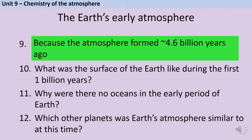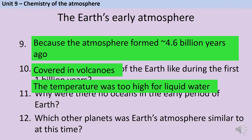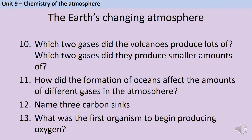For the first billion years, Earth's surface was covered in volcanoes, and for that reason there were no oceans because it was so hot that any water would immediately have evaporated. During this time, Earth's atmosphere was similar to Mars and Venus. The volcanoes produced huge amounts of carbon dioxide and nitrogen, but also smaller amounts of methane and ammonia.